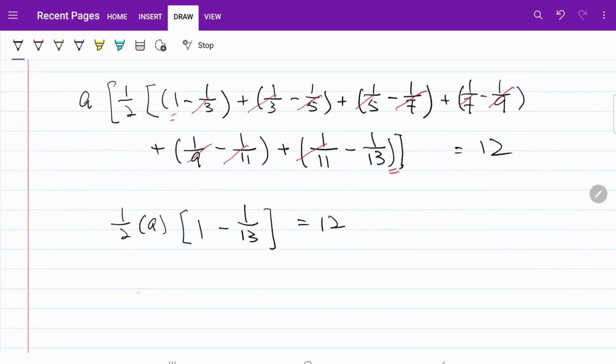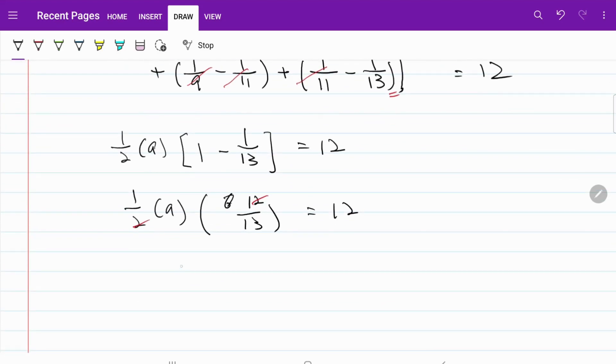From here, I have 1 over 2 multiplied by A multiplied by 6, I'm sorry, 12 over 13 is equal to 12. If we simplify the fraction, what I have now is 6A over 13 is equal to 12, A is equal to 26.